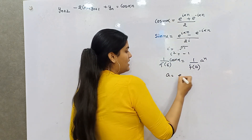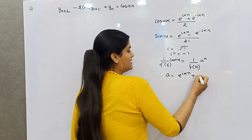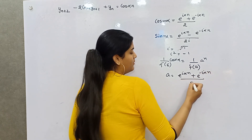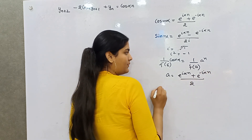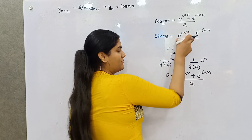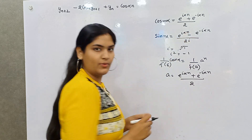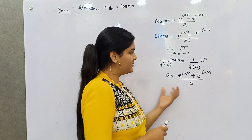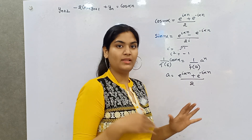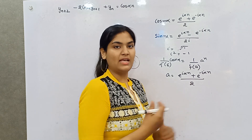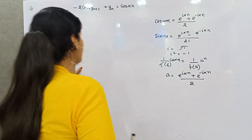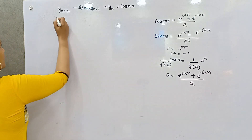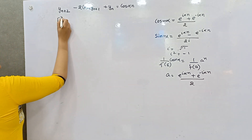For cos(nα), you use e^(iαn) + e^(-iαn) divided by 2. When you take sin(nα), you use the corresponding sine formula. These are some typical formulas but you will learn them as you practice.